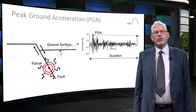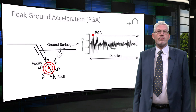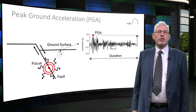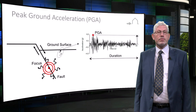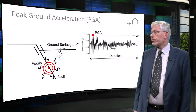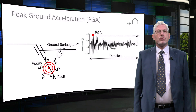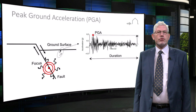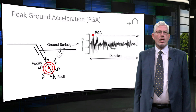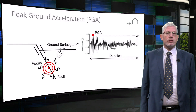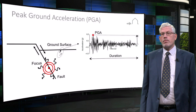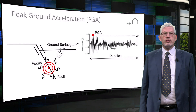The next key parameter to consider is peak ground acceleration. This is often referred to as PGA and is equal to the maximum ground acceleration that has occurred during earthquake shaking at a specific location. As shown in the graphic, PGA is equal to the amplitude of the largest absolute acceleration recorded on an accelerogram during an earthquake. It is one instant in time in the overall earthquake record. Unlike the Richter and moment magnitude scales, it is not a measure of the total energy, magnitude or size of an earthquake, but rather a measure of how violently the earth shakes at a given geographic point.